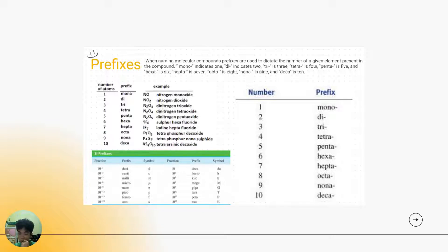Prefixes are used to dictate the number of given elements present in the compound. Mono indicates 1, di indicates 2, tri indicates 3, tetra is 4, penta is 5, hexa is 6, hepta is 7, octa is 8, nona is 9, and deca is 10.